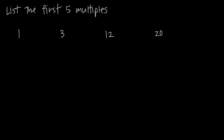In this video, we're talking about how to find the multiples of a number, and we've been asked to find the first 5 multiples of each of the numbers we've been given. The multiples of a number are just the numbers that can be divided evenly by the number we've been given.